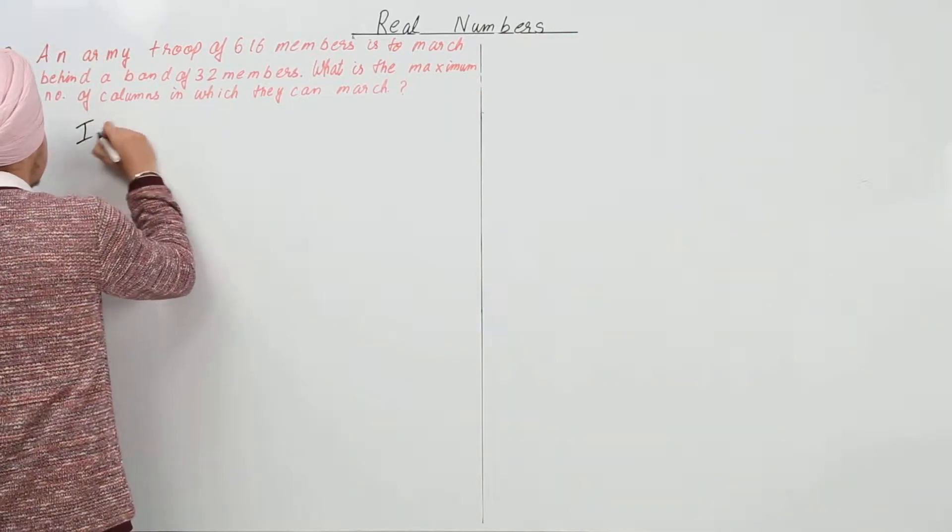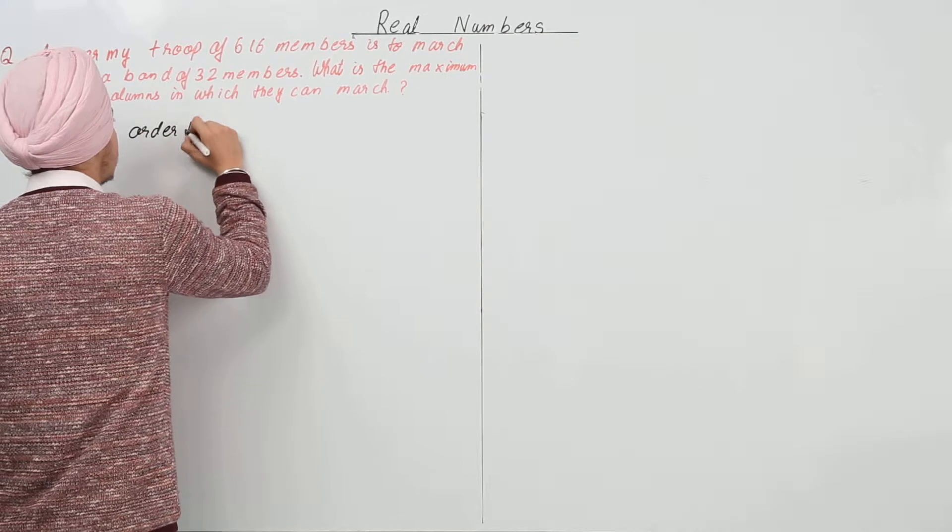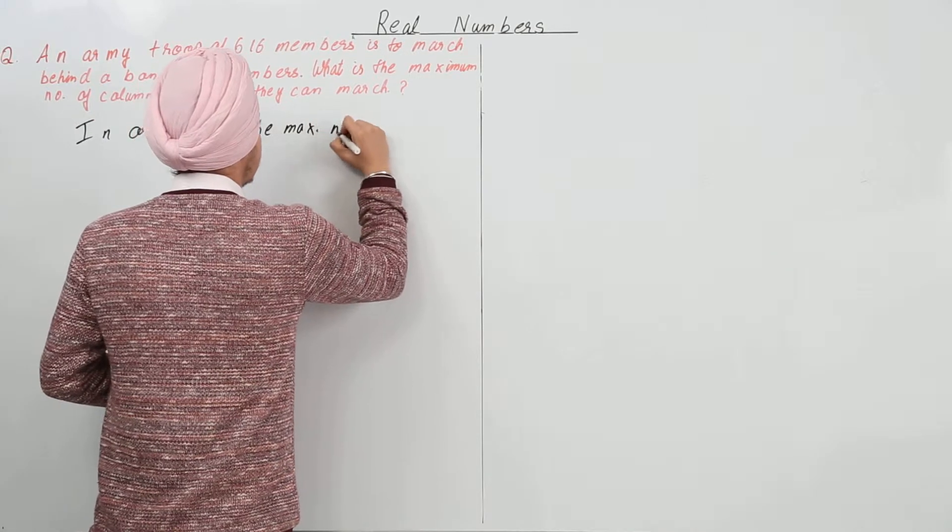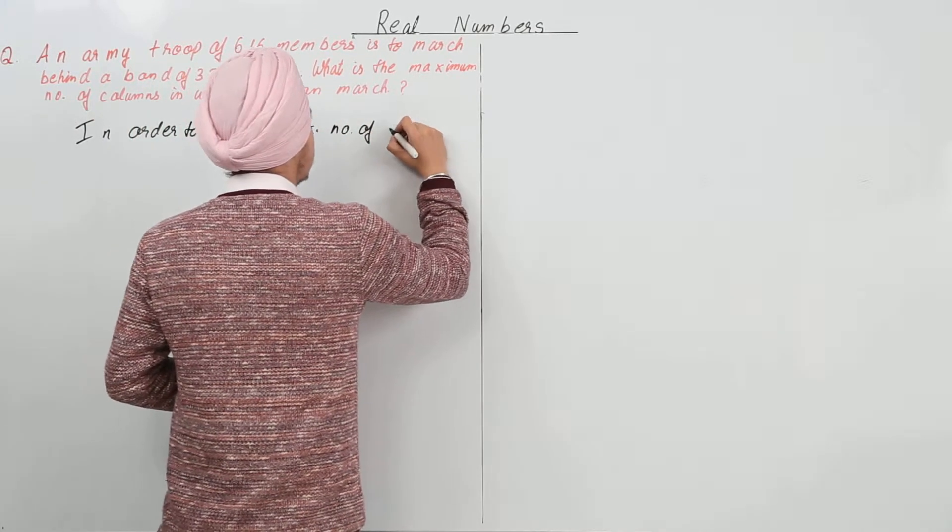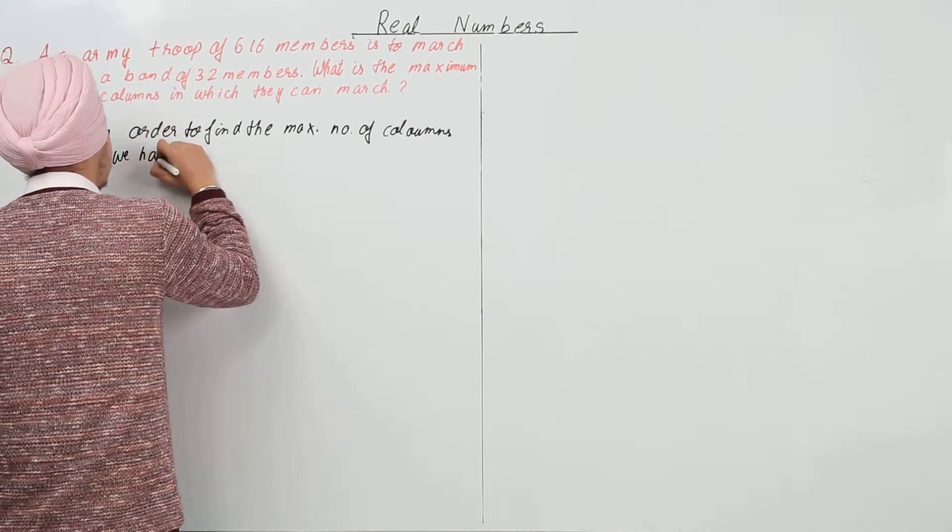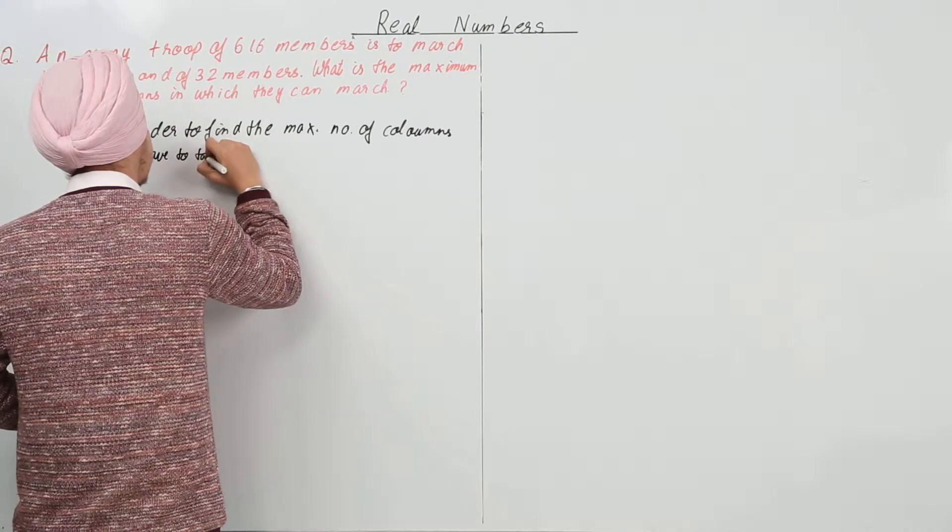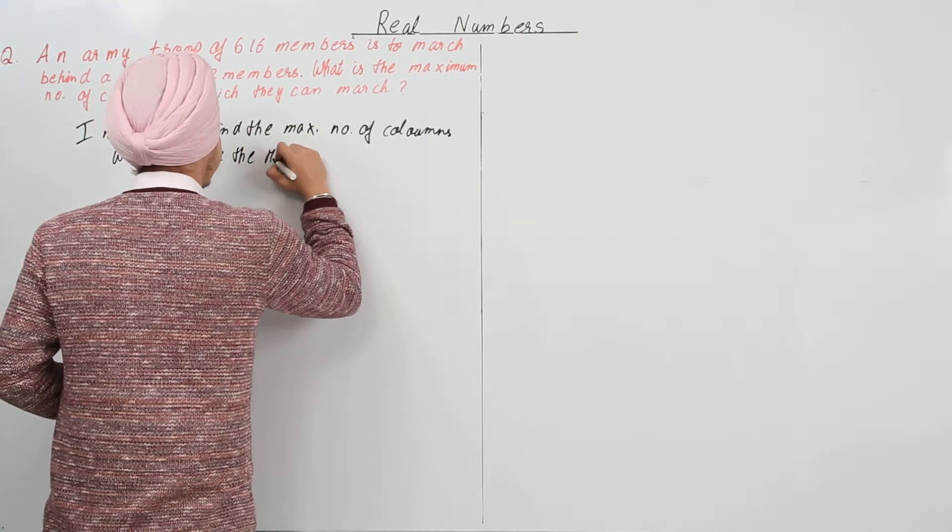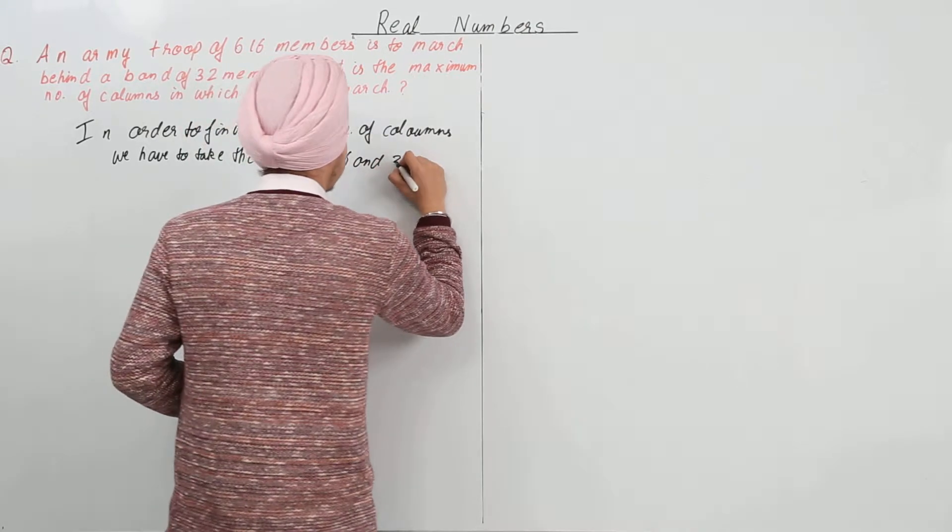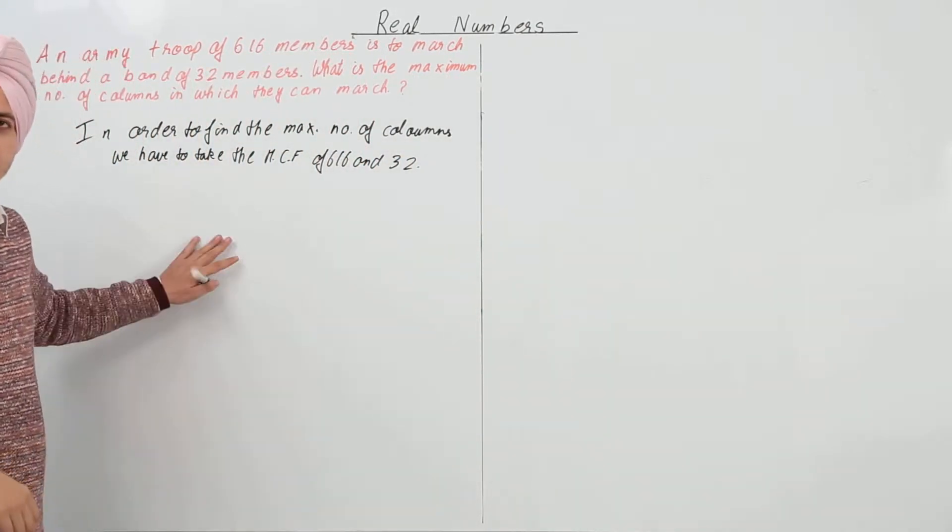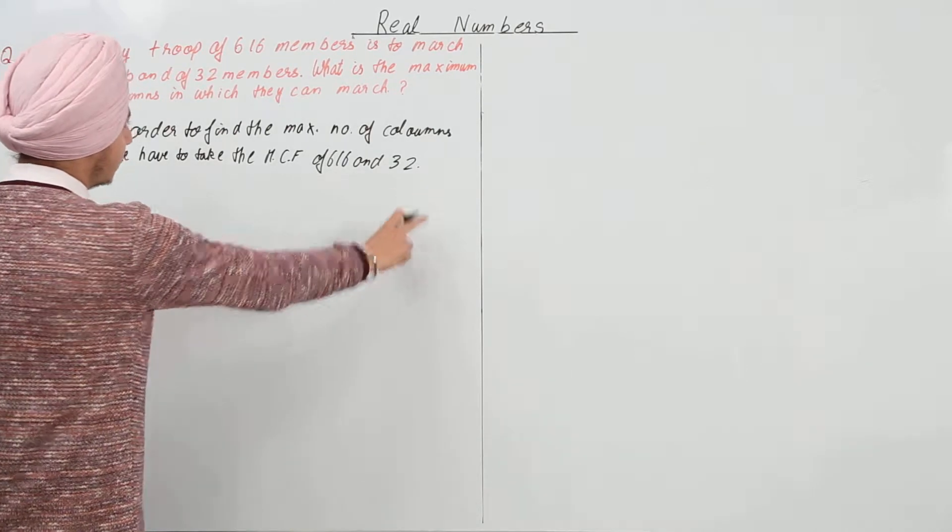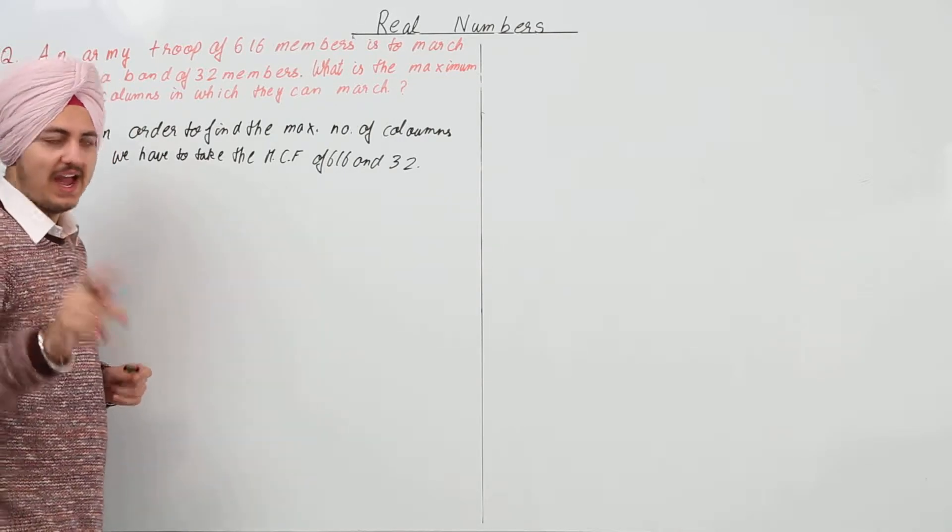So in order to find the maximum number of columns, we have to take the HCF of 616 and 32. How do we take the HCF of 616 and 32? By Euclid's division algorithm.